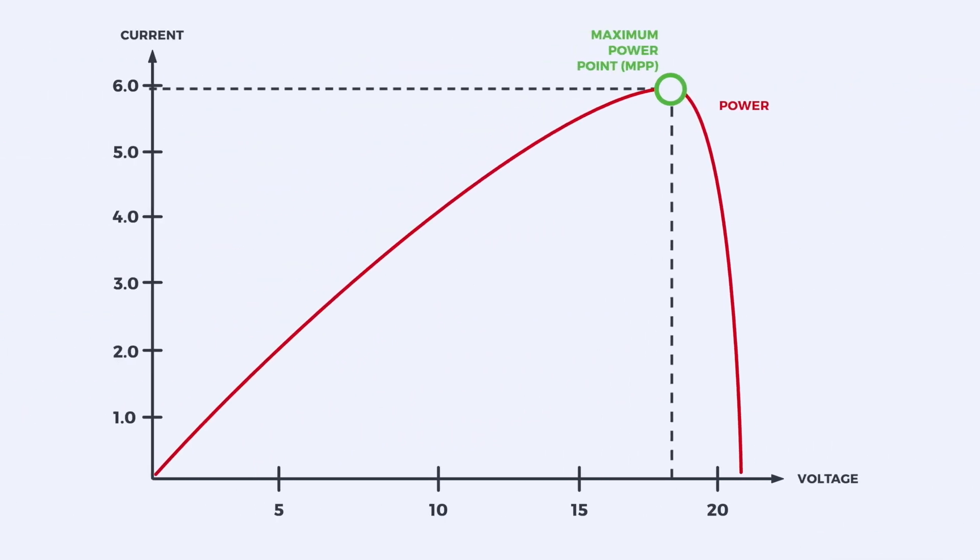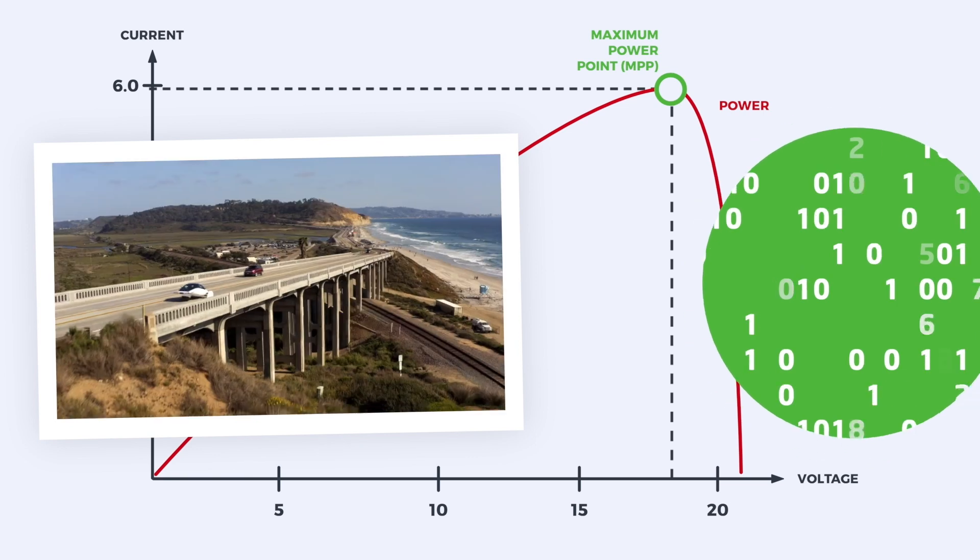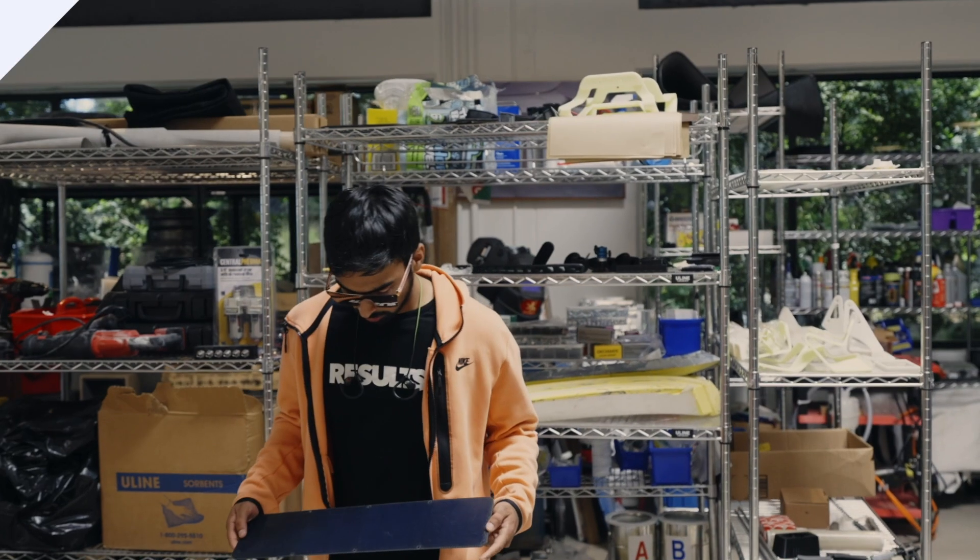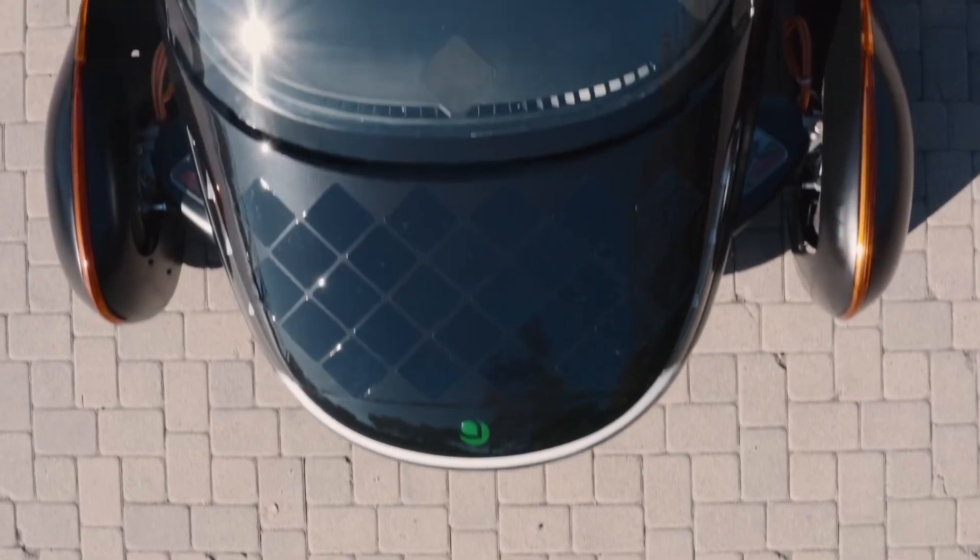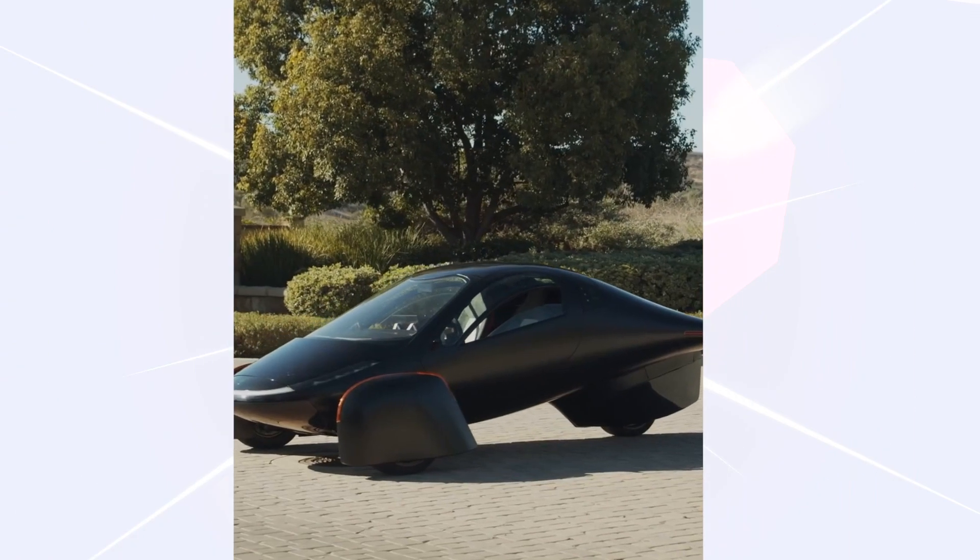To make sure we get peak power as much as possible, even while Aptera is driving, we use advanced software algorithms to optimize output power. Our solar engineers are innovating every day to create the most robust solar product possible. And we're excited for you to experience the power of solar mobility first-hand.